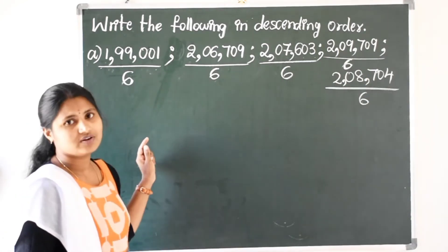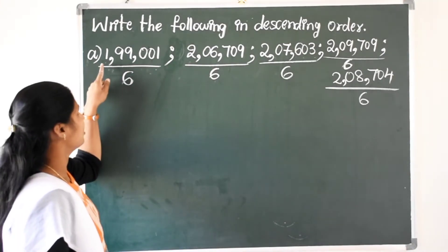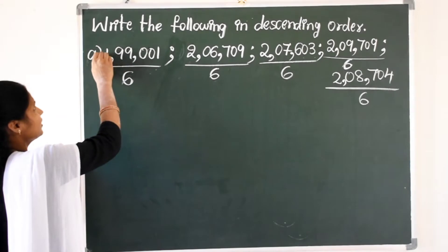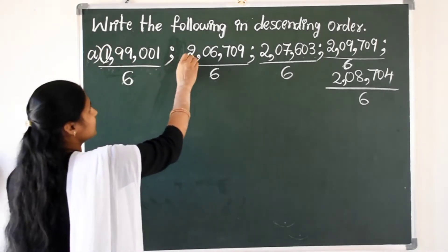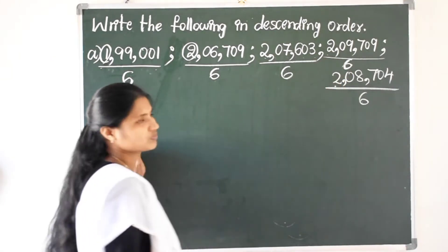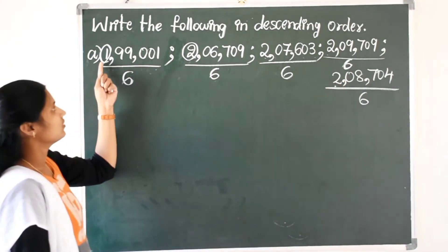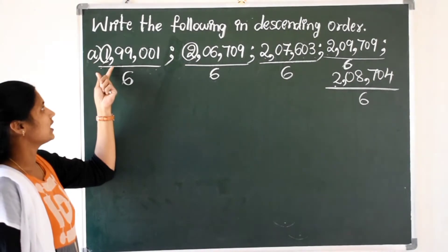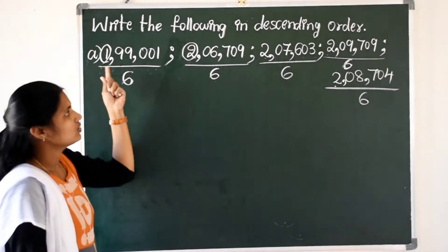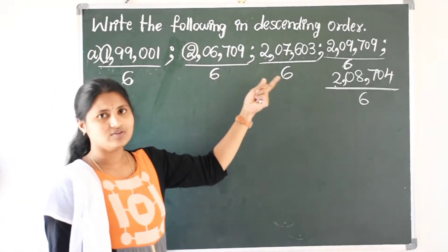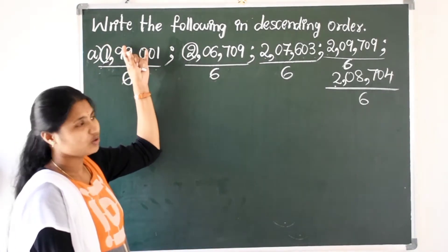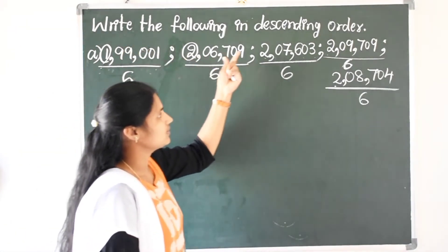So, compare the first digit in all numbers. Here, which is the big number? Here 1 and in this number is 2, in this number also 2, 2 and 2. This is the only number having 1 in the lakhs place. So, 2 is bigger than 1. First, leave this number. Don't see this number. First compare these 4 numbers.